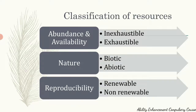The third criteria for classification is based on reproducibility — that is, renewable or non-renewable resources. Reproducibility means how quickly a resource can be renewed, brought back, or replenished in the environment. Renewable resources include forests, wildlife, fresh water, and soil fertility, as these can be replenished quickly with appropriate measures. Non-renewable resources include coal, petroleum, and other fossil fuels, which cannot be replenished quickly — they take several thousands of years to renew.